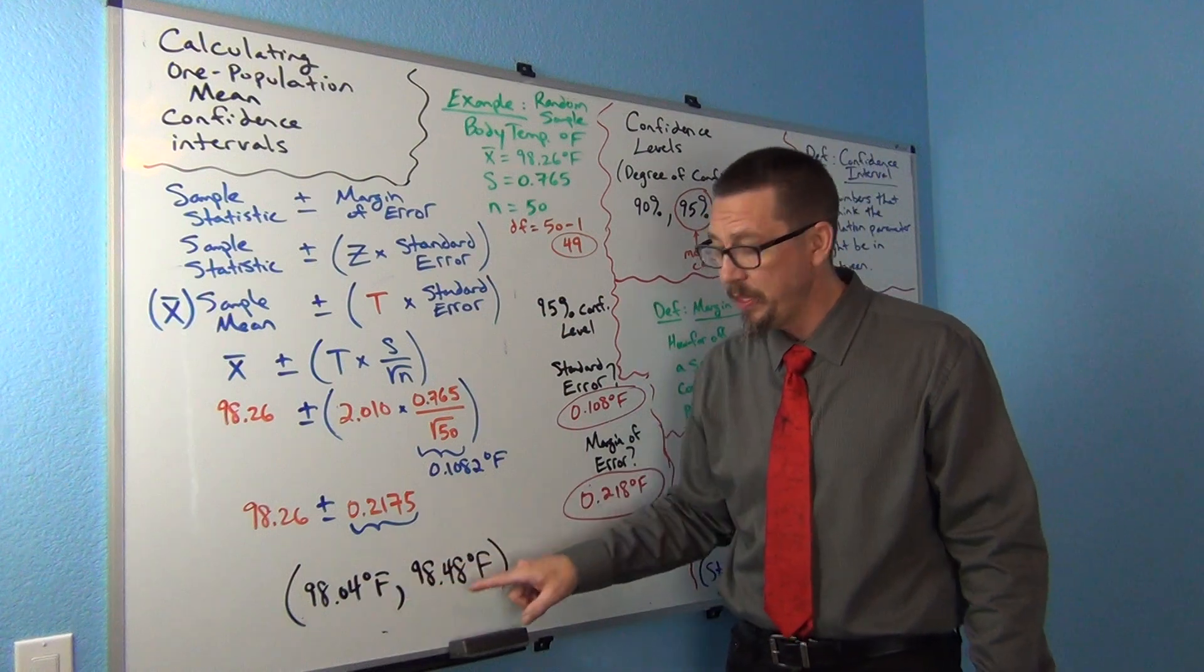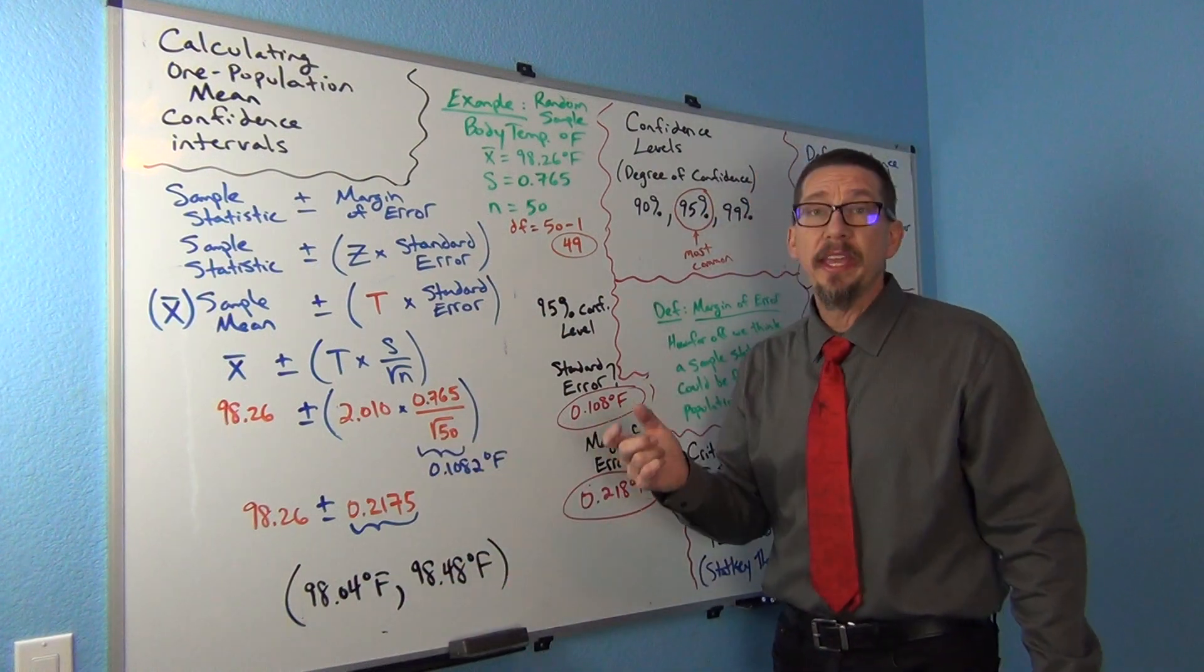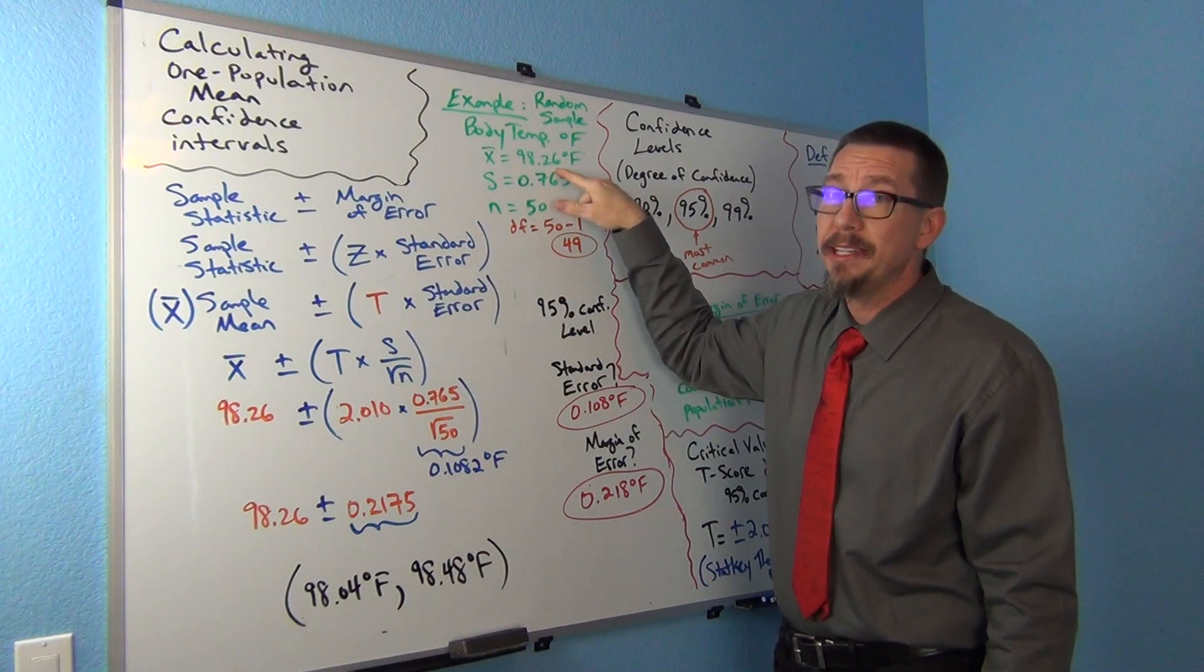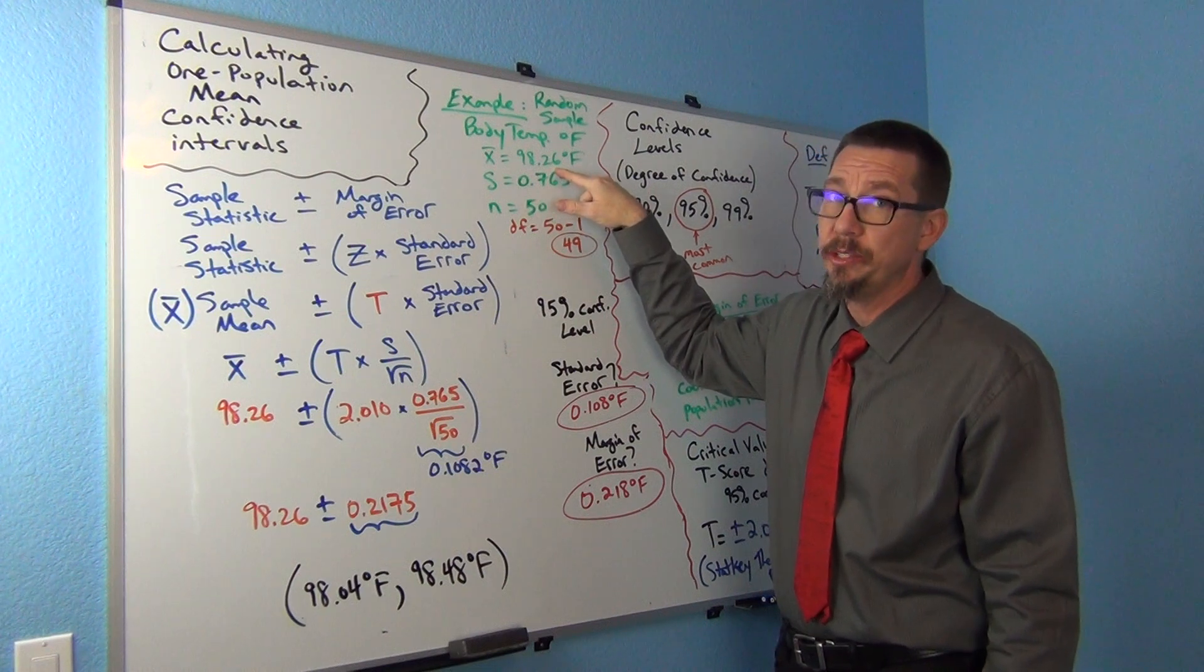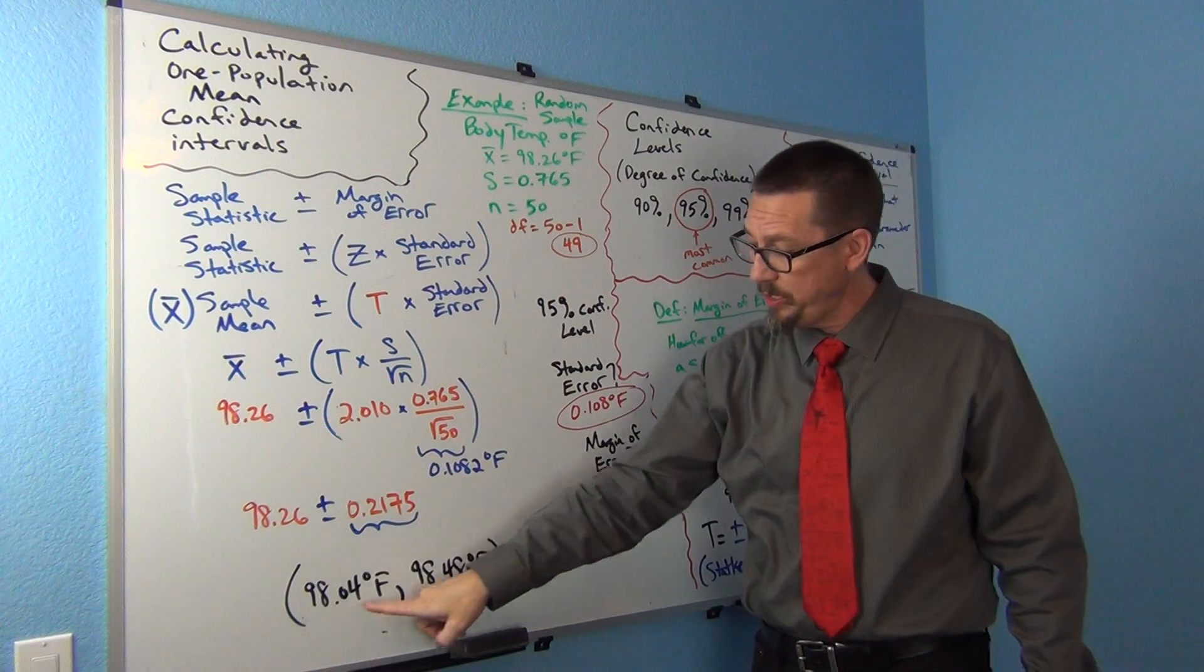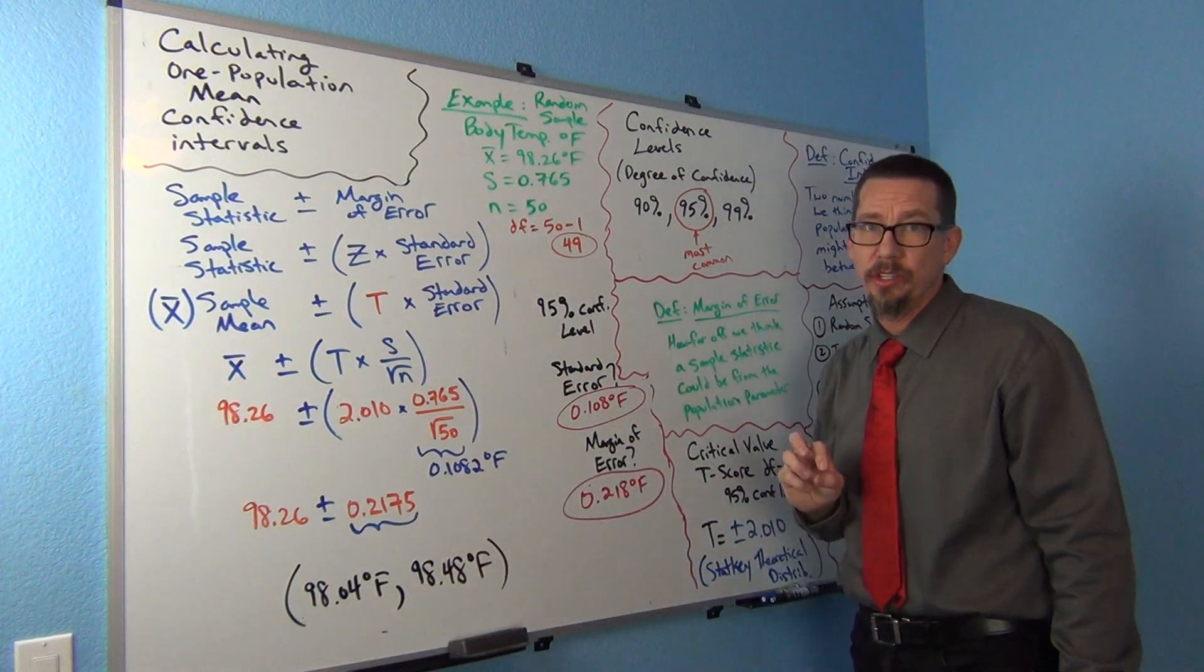Remember, two numbers we think the population is in between. Interesting thing is that the sample mean was actually 98.26. Remember, that does not tell you that the population mean is exactly 98.26. It tells you the population mean could be anywhere between these two numbers. That's the whole idea of the confidence interval.